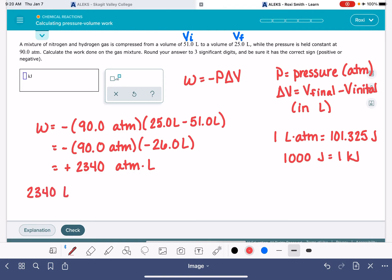2340 liters atmospheres, multiply by our conversion factor that puts liters atmospheres on the bottom and joules on the top. The numbers are 101.325 joules for every one liter atmosphere. And then get rid of that joule unit and convert into kilojoules: one kilojoule is 1000 joules. Going back to the calculator again, we get 237.1 kilojoules.